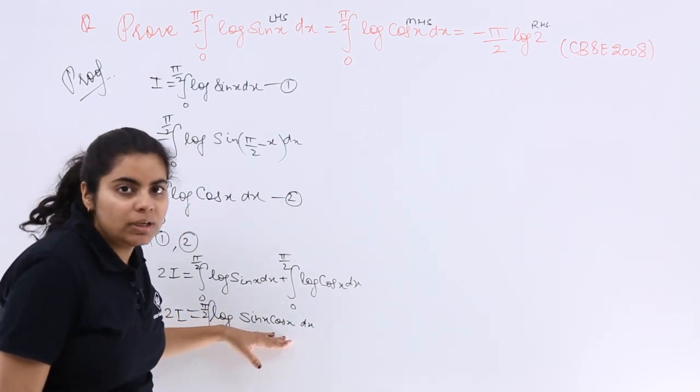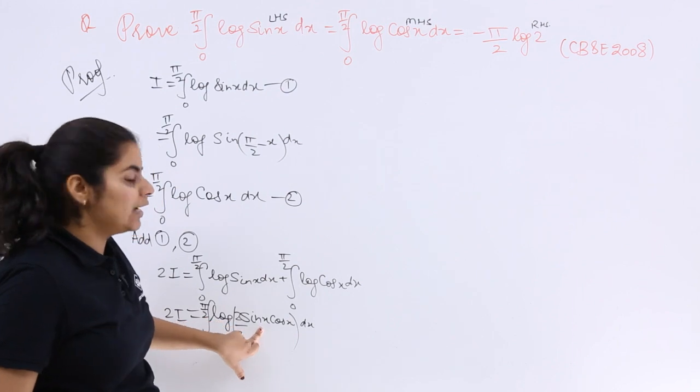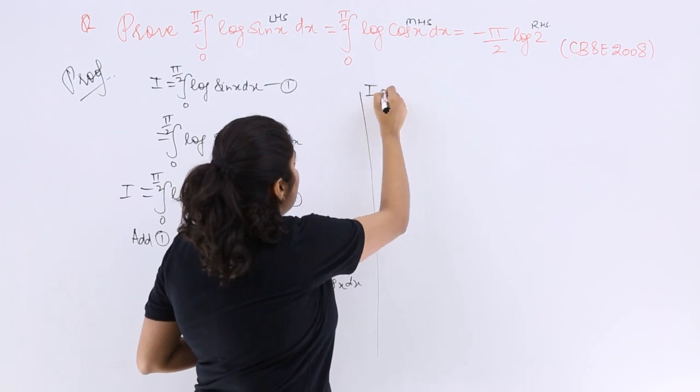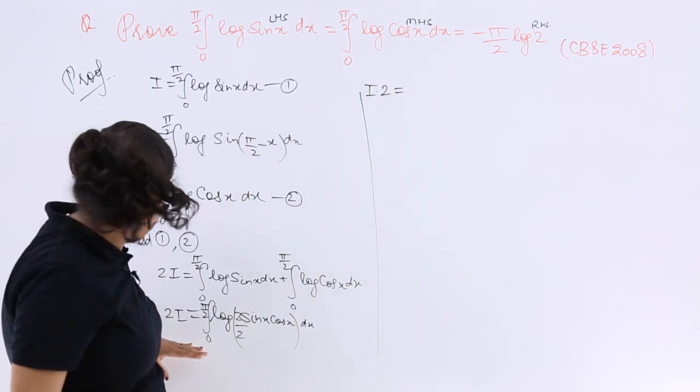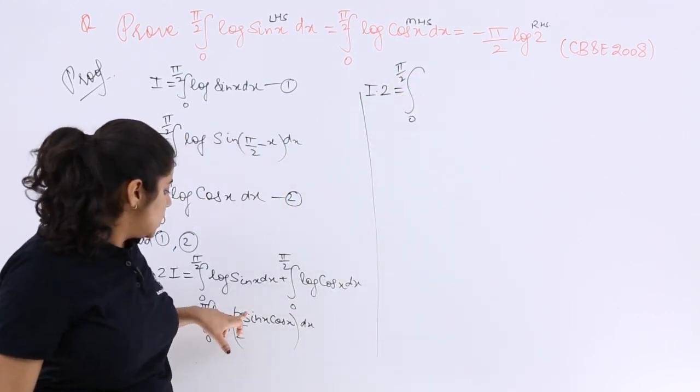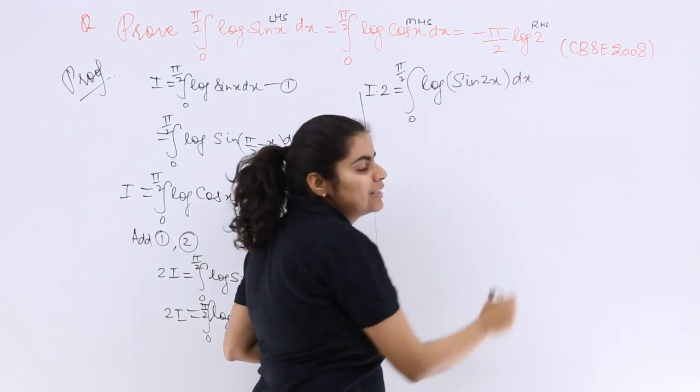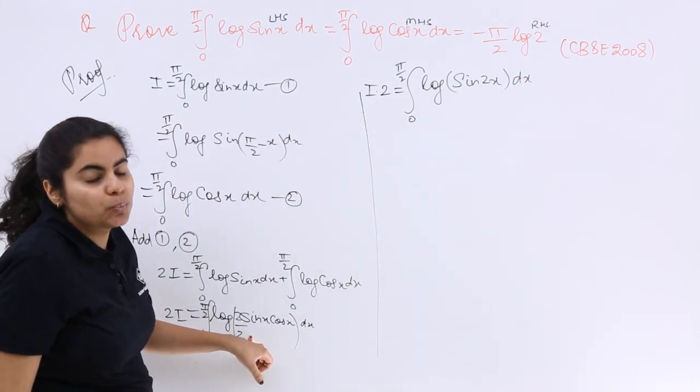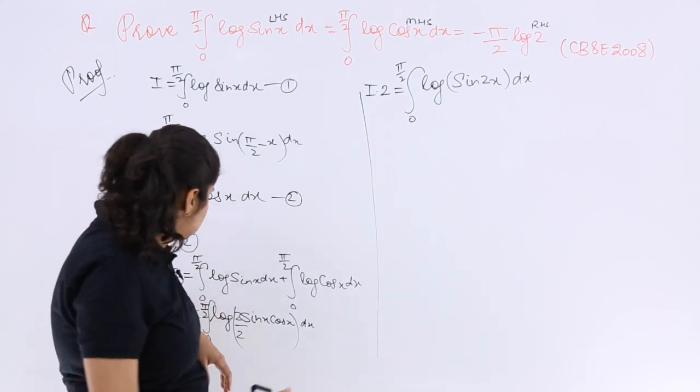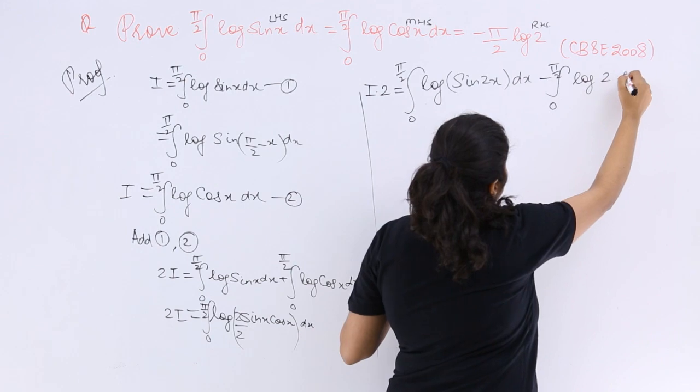Now see, sin x cos x I do not understand until and unless I have to divide by 2 and multiply by 2 in order to make it 2 sin x cos x as sin 2x. Now let me write it other way round. So it is 2I is equal to 0 to π/2 log sin 2x because log 2 sin x cos x is sin 2x dx. Minus log 2 because log sin 2x upon 2 is there, so it becomes log m minus log n.